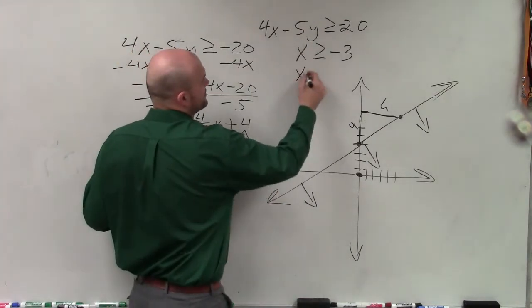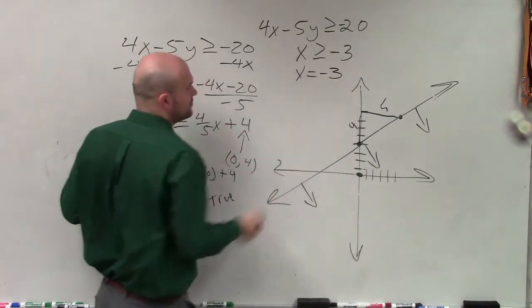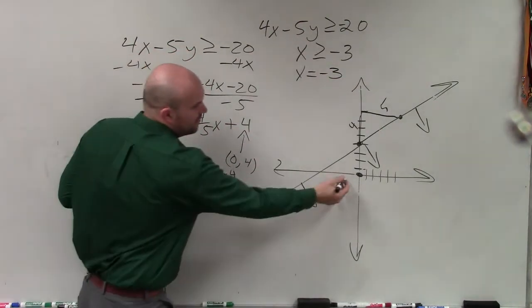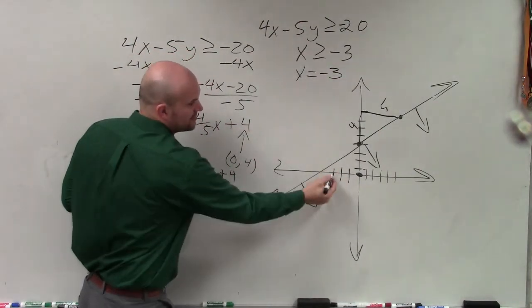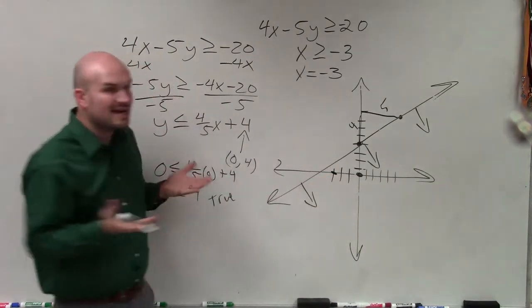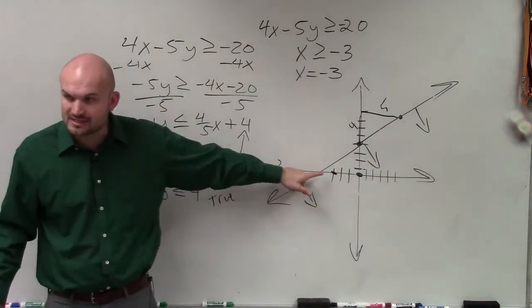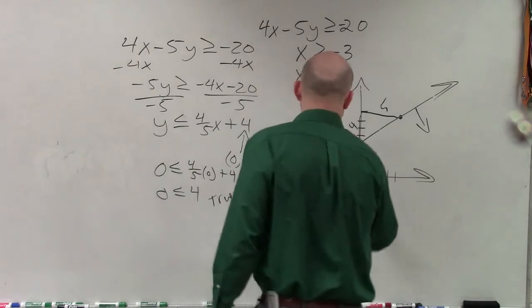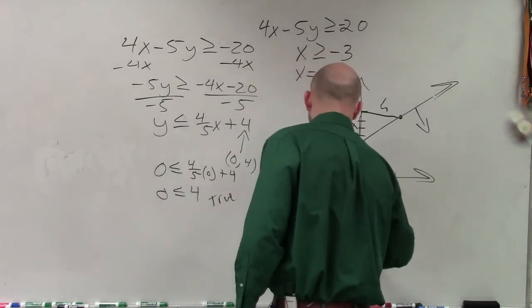So now I have to do x is greater or equal to negative 3. And the best way, ladies and gentlemen, to do this would just think of this as x is equal to negative 3. So therefore, x is equal to negative 3 right here. Now, depending on any y value, x is always going to equal negative 3. So therefore, that produces a vertical line.